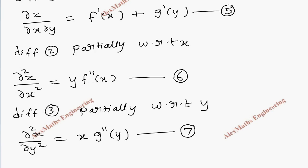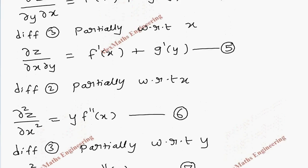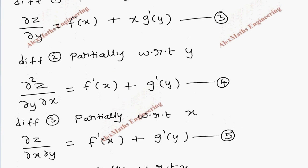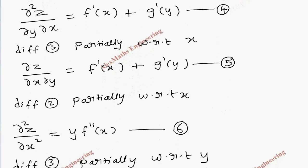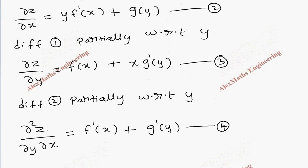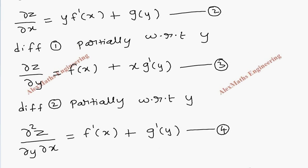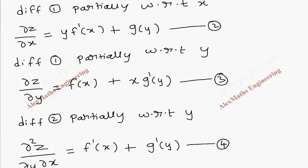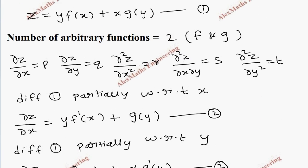But expressions 6 and 7 are not going to help to eliminate the arbitrary functions, because expression 6 has f double dash and expression 7 has g double dash of y. So let's try to eliminate using the previous expressions. Since the fourth and fifth expressions are both the same, let's keep only up to the fourth expression. So we have expressions 1, 2, 3, and 4.